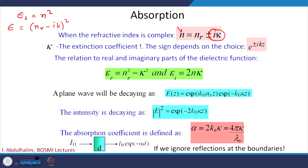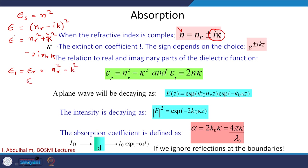You can choose the sign, and depending on the sign, κ can be negative or positive. If you square it out, ε = nᵣ² + κ² − 2i·nᵣ·κ. So the real part ε₁ = nᵣ² − κ², and the imaginary part ε₂ = 2nᵣκ.